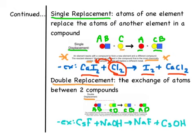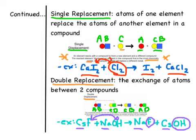Double replacement usually occurs in ionic compounds. Keep the metal atoms separate — they stay with their respective compound — and just switch the non-metal partners. So if Cs and Na are the metals in the two reactant compounds, they remain separate in the products, and we switch the non-metals: Cs goes from F to OH, and Na switches from OH to F.